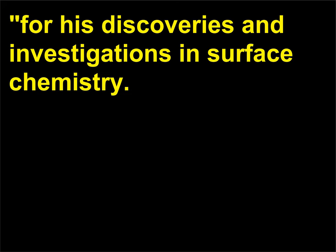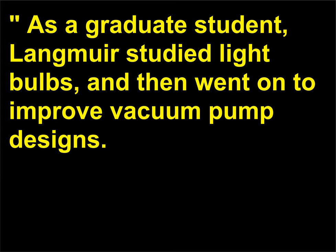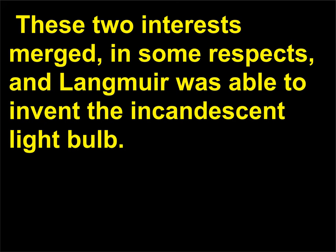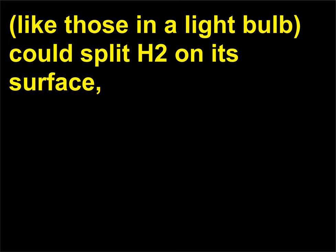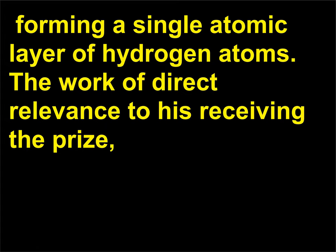For his discoveries and investigations in surface chemistry. As a graduate student, Langmuir studied light bulbs, and then went on to improve vacuum pump designs. These two interests merged in some respects, and Langmuir was able to invent the incandescent light bulb. These led to his interest in surface chemistry, after observing that a tungsten filament — like those in a light bulb — could split H2 on its surface, forming a single atomic layer of hydrogen atoms.